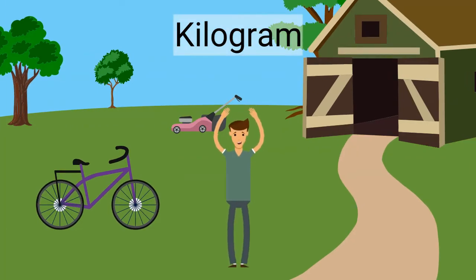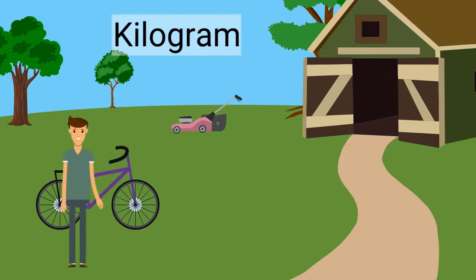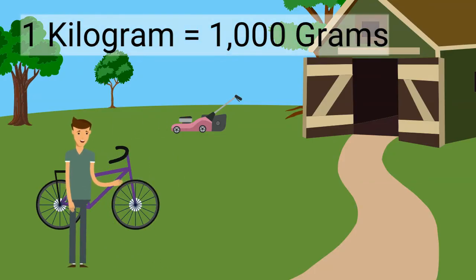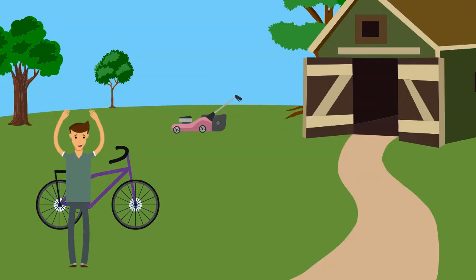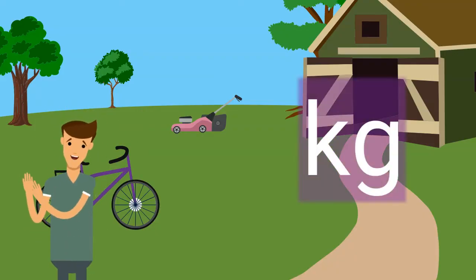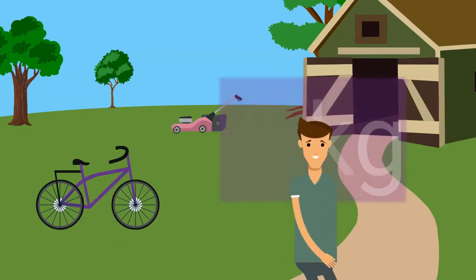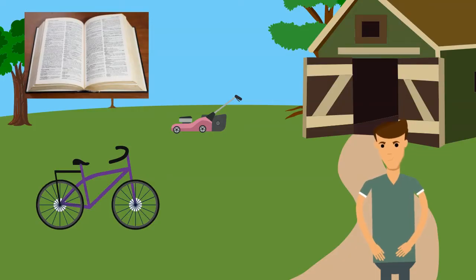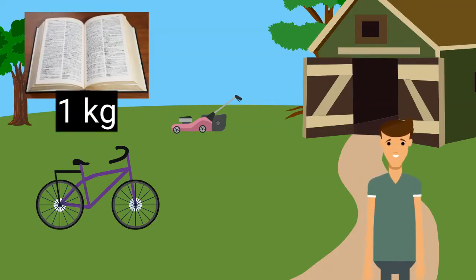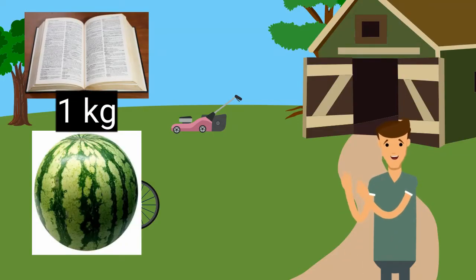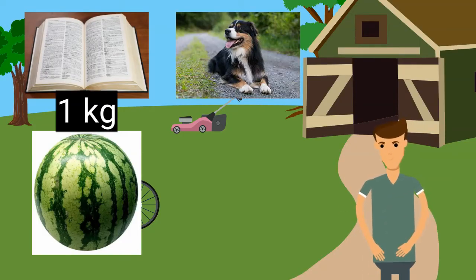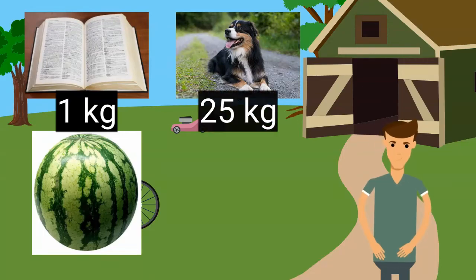A kilogram also measures mass. A kilogram is larger than a gram. In fact, one kilogram equals 1,000 grams. That's a lot of grams. Kilograms are shown with an abbreviation of KG. This measurement can be read as five kilograms. A thick school dictionary is about the weight of one kilogram. A watermelon also weighs around one kilogram. Knowing this, we can estimate that the weight of a medium-sized dog is about 25 kilograms.